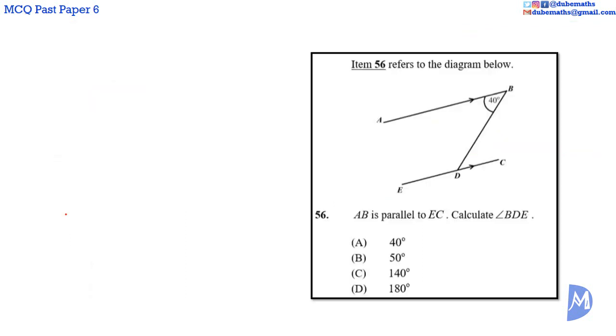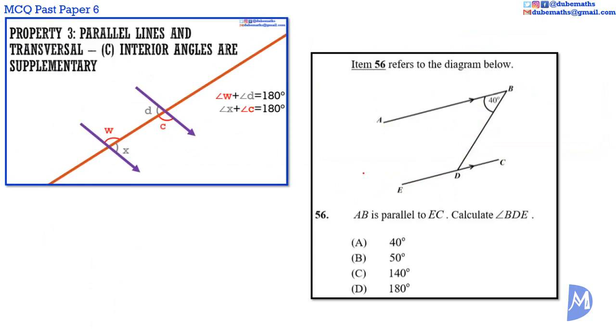Question 56. When two parallel lines are cut by a transversal, interior angles are supplementary. That is, they add to 180 degrees. The given angle ABD and the required angle BDE are interior angles.